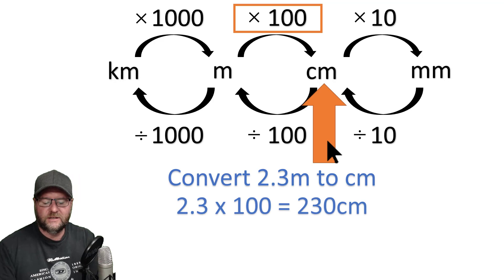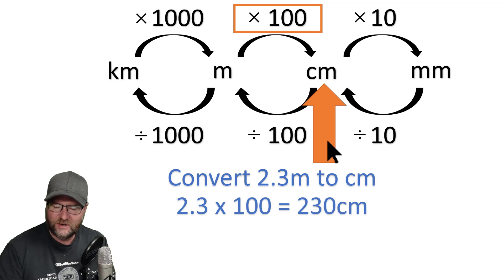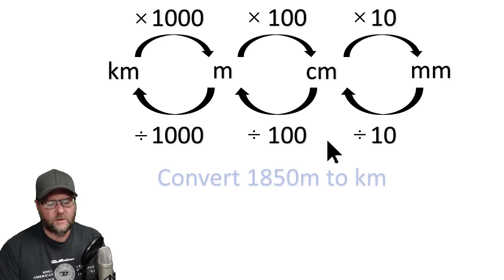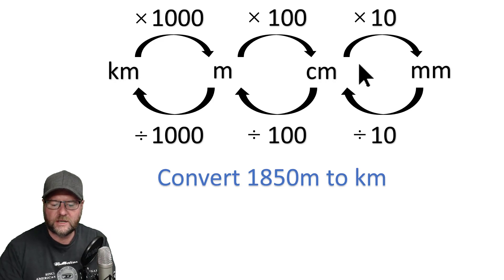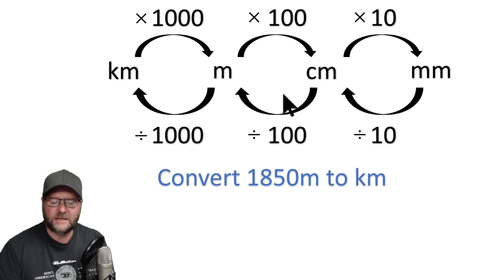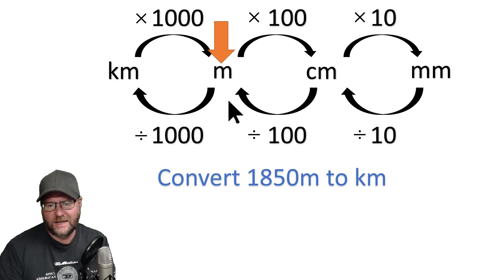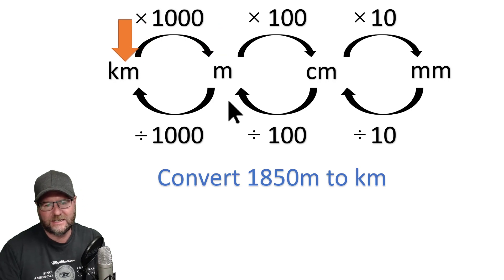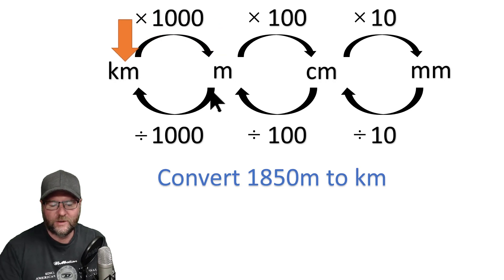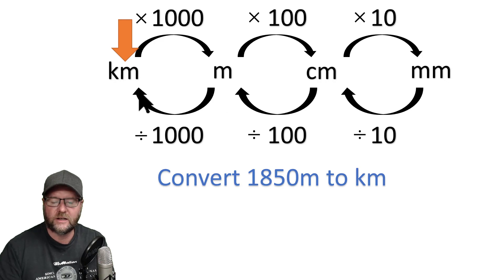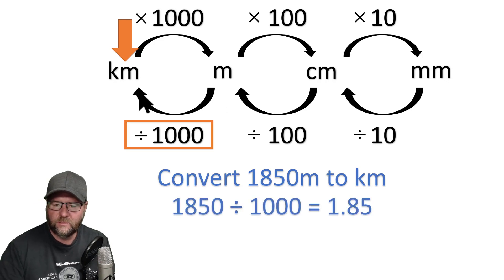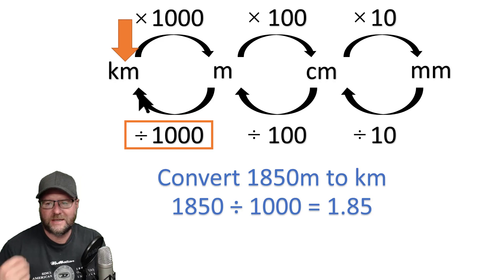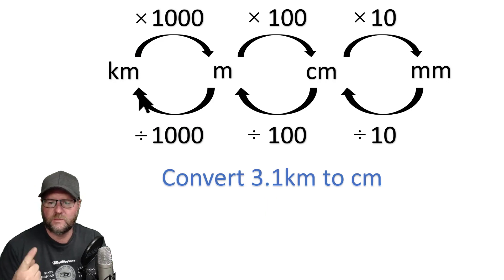2.3 times 100 is 230 centimeters. What about the other way? What if I was asked to convert 1850 meters to kilometers? I'm going to start at meters and end up at kilometers. Following the arrow, it tells me to take the amount I'm starting with and divide it by 1,000. When I do that, I get 1.85 kilometers. That's how our chart works.